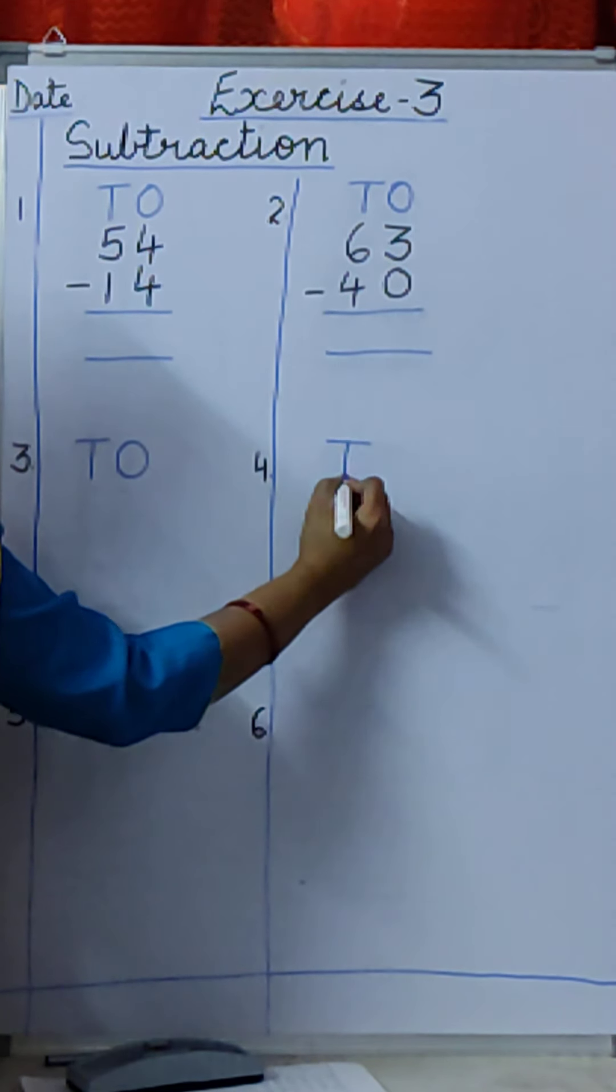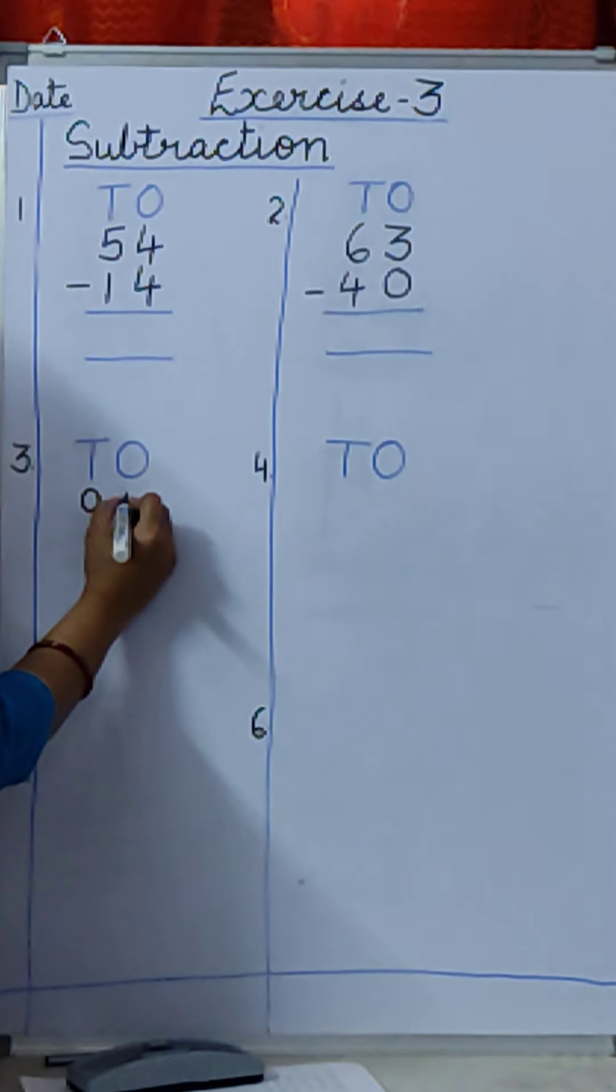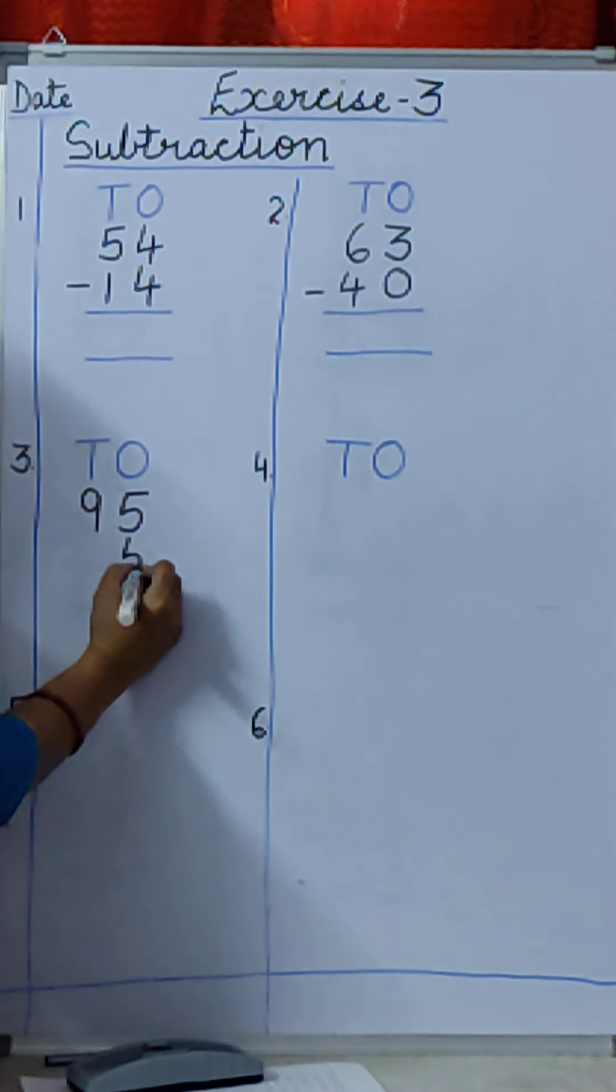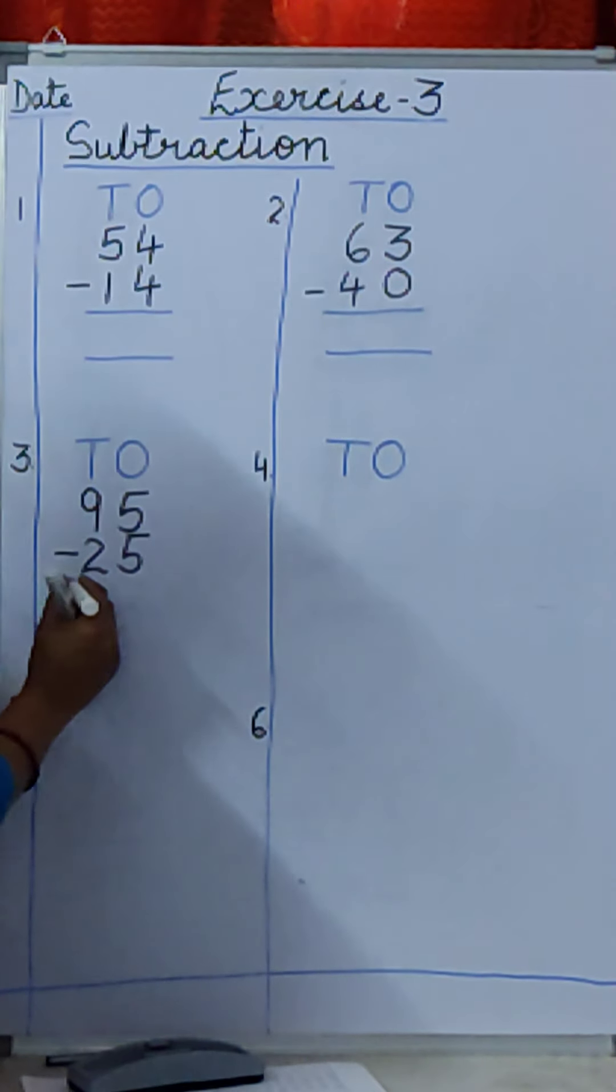T.O. Again you will write T.O. Now we will minus. Third one is. Under T.O. you will write 95 minus 25. So first what will you minus boys? Come on tell ma'am. 5 minus 5. And then 9 minus 2. And then you will draw your line with the blue pencil.